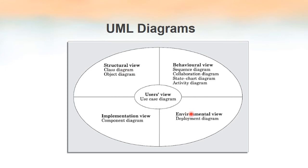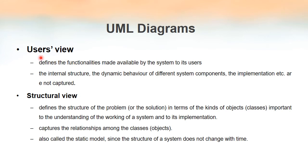It is not compulsory to use all nine diagrams to model something. For a uses view, we use the use case diagram; for a structural view, we use class or object diagrams. The uses view is how the user visualizes the system — when we talk to the customer about their requirements and draw a model based on what we've understood, that is the uses view. In that model we write no implementation details; it is just a model to make the customer understand.